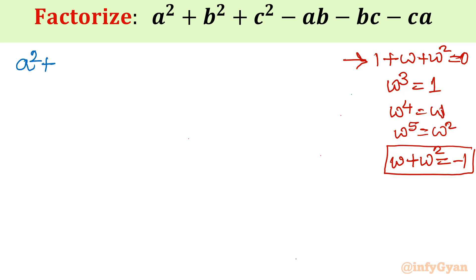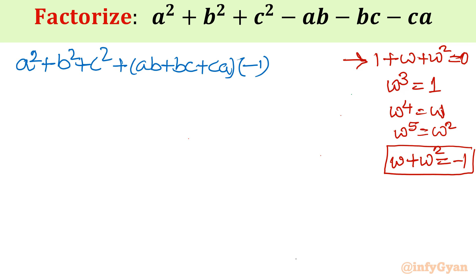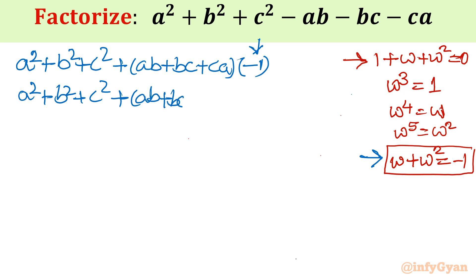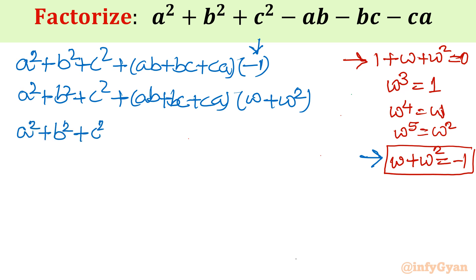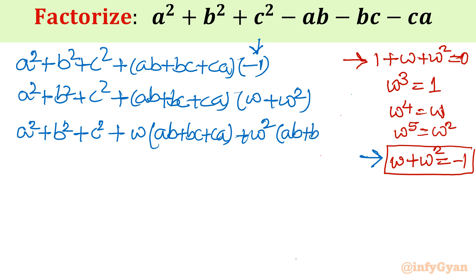Let me write our expression first: a square plus b square plus c square, then ab plus bc plus ca, then times minus 1. I use the identity omega plus omega square equals minus 1 in that place. So I write a square plus b square plus c square plus (ab plus bc plus ca) times (omega plus omega square). Expanding by distributive law: omega times (ab plus bc plus ca) plus omega square times (ab plus bc plus ca). There are 9 terms in total.